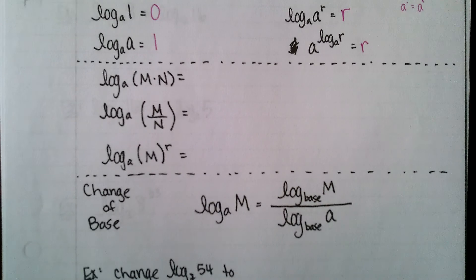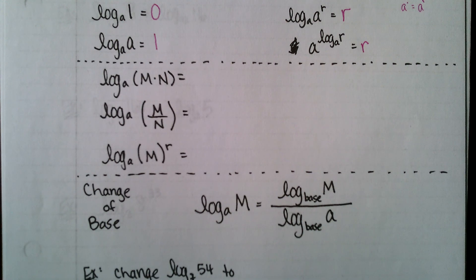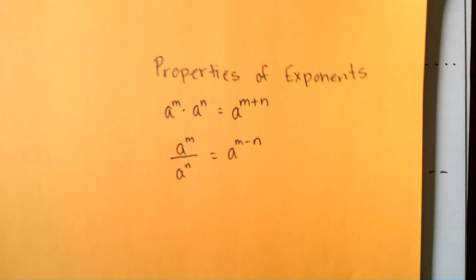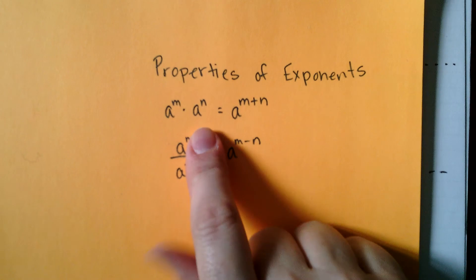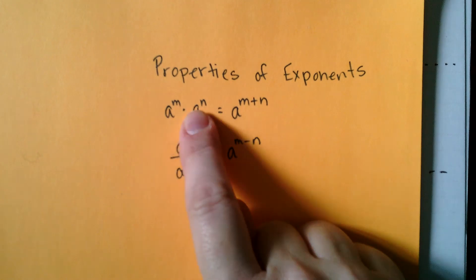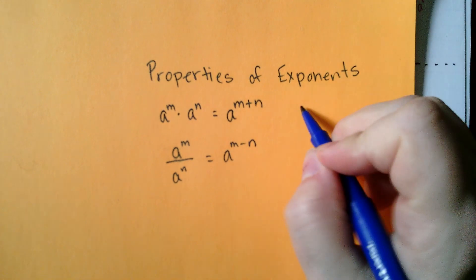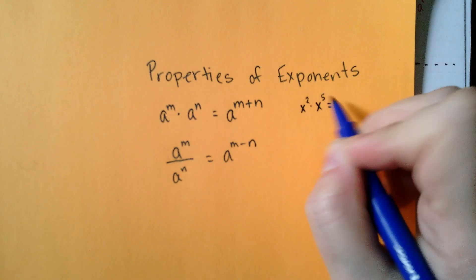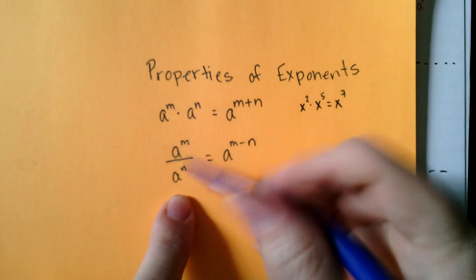A couple more properties: the product and quotient rules for logarithms are similar to the properties for exponents. As a refresher: when we had exponents, if I multiplied two of the same base raised to different powers, I end up adding their exponents. So x squared times x to the fifth gives x to the seventh.